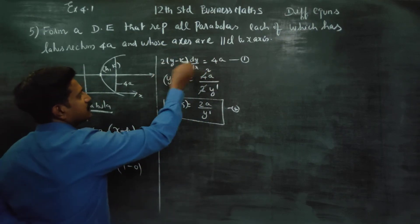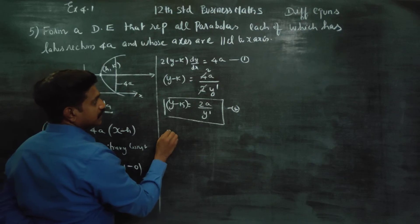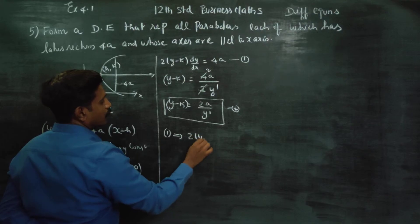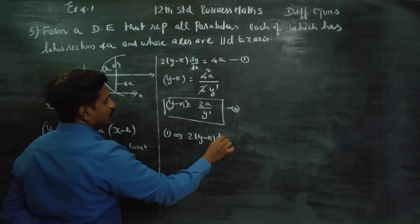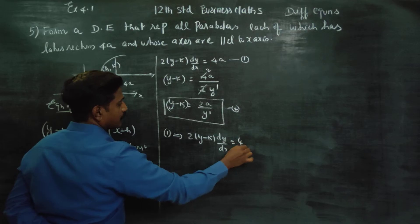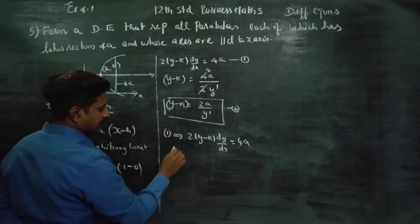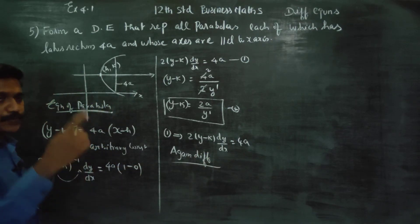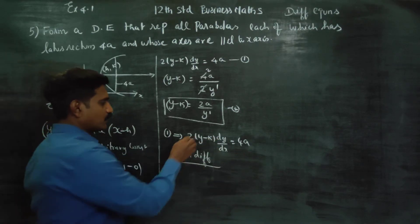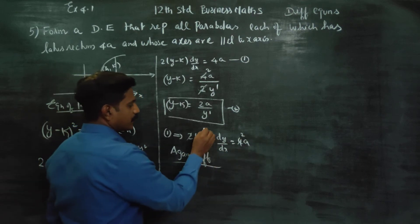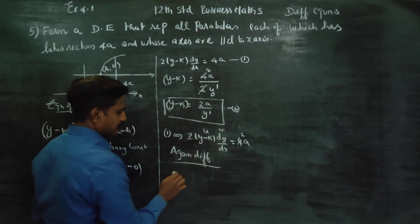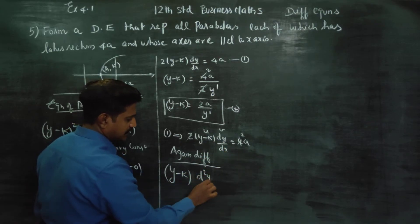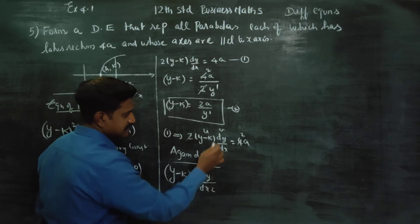Now differentiate a second time. The 1st equation is: 2(y − k) dy/dx = 4a. Differentiating again using the UV formula: differentiating (y − k) dy/dx with respect to x.